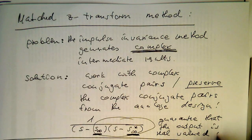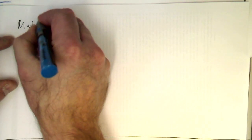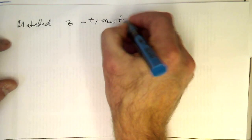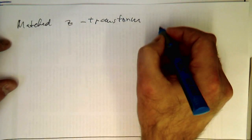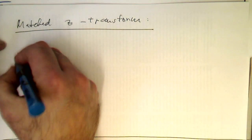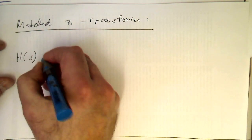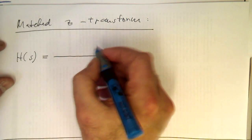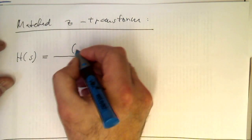So the general idea of the matched Z-transform is the following: we've got our analog function H(s) and we have it in the following form.